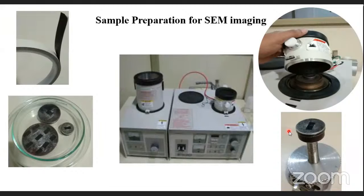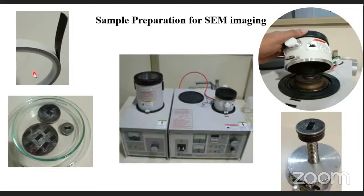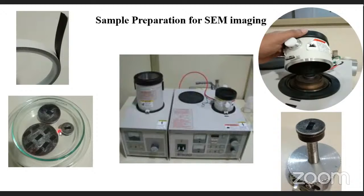If your sample is not conductive — such as biological samples, polymers, or polymer nanocomposites — we use sputtering. Sputtering means we sputter a very small thickness of gold over the sample. This is done on carbon tape placed over stubs — where we place the sample. For our instrument, the stub allows multiple samples to be analyzed; you can number them and analyze one by one.